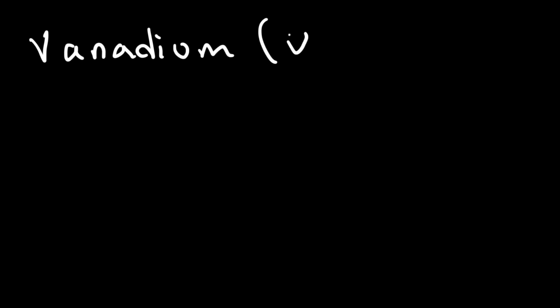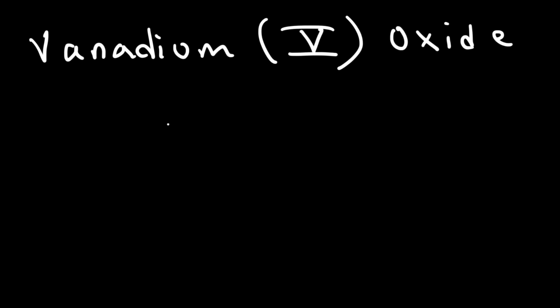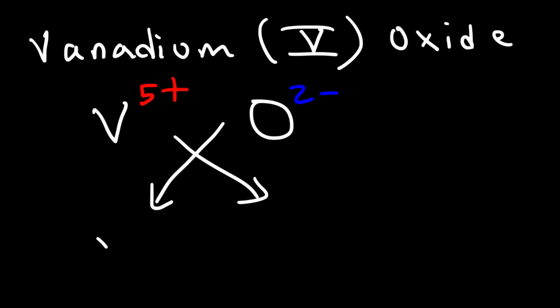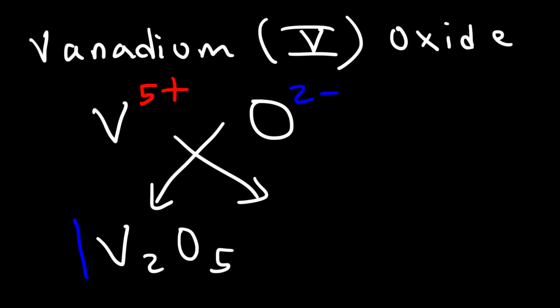For vanadium(V) oxide: V has a +5 charge and O has a −2 charge. Swapping the charge values as subscripts gives V₂O₅. That's how you write chemical formulas for ionic compounds.